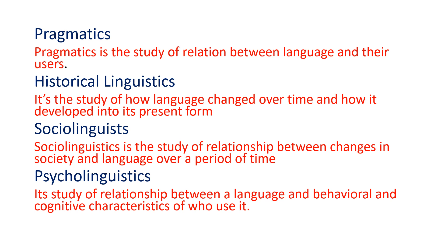Sociolinguistics — socio means society and linguistic means language — so it is the study of the relationship between language and society. The study of how changes in society relate to changes in language over time is called sociolinguistics. It's about how social factors such as class, gender, age and occupation can influence language use.